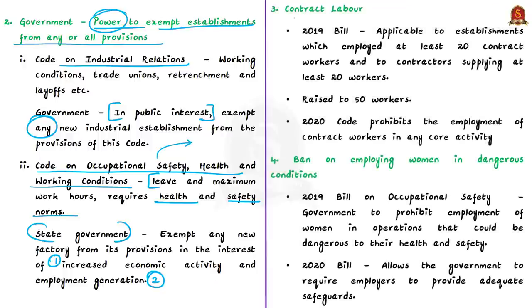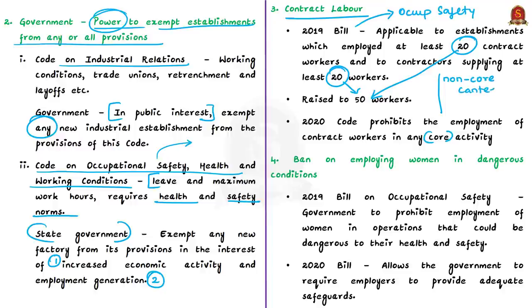Thirdly, there are some changes related to contract labor. The 2019 bill on occupational safety, health and working conditions was proposed to be applicable to establishments that employed at least 20 contract workers and to contractors supplying at least 20 workers. The thresholds have been raised to 50 workers for both. The 2020 code prohibits employment of contract workers in any core activity and specifically permits employment of contract workers in a specified list of non-core activities including canteen, security, and sanitation services.